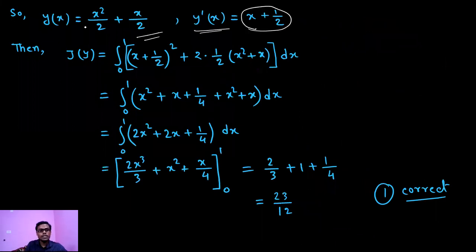Now put these values of y(x) and y'(x) in j[y]. Our j[y] equals to integration 0 to 1 of (y')² plus 2y. This is our j[y].